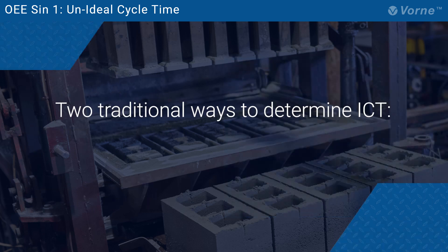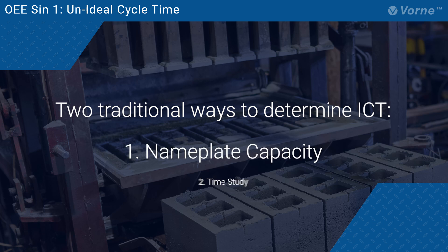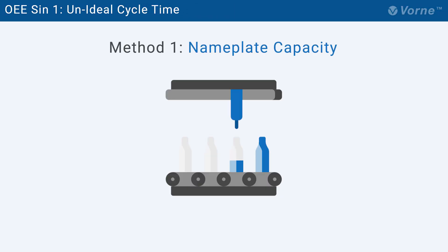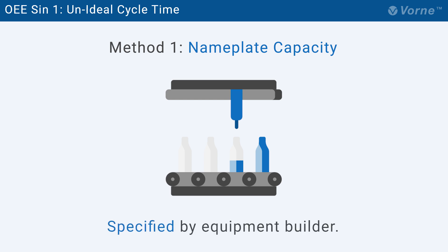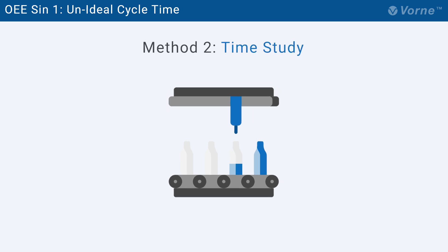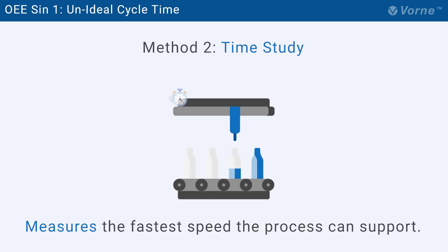There are two traditional ways to determine an accurate ICT: nameplate capacity and time studies. Nameplate capacity is specified by the equipment builder — it's the design capacity of a machine or process. Time studies measure the fastest speed that the process can support on a sustained basis.